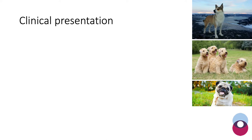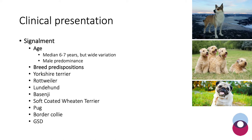Regarding clinical presentation and signalment, most dogs are middle aged — the median in several studies is around six to seven years — but there is a wide variation and it can present in very young as well as old animals. There seems to be a male predominance in some studies, and well-known breed predispositions include Yorkshire Terrier, Rottweiler, Lundehund, Basenji, Soft-Coated Wheaten Terrier, Pug, Border Collie, and German Shepherd.